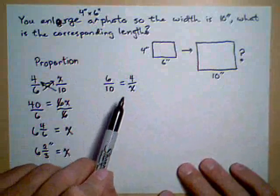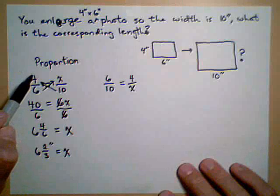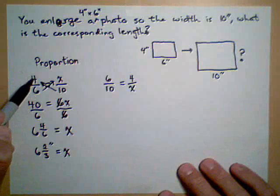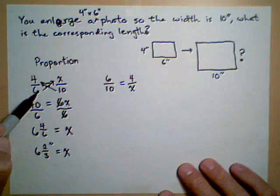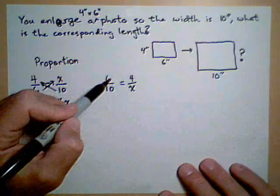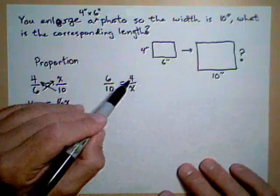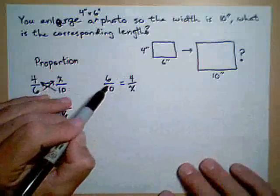Notice, this is important, that with a proportion, the same photo is either lined up vertically, 4 and 6 are both on the small photo, or horizontally, 4 and 6 are both on the small photo. That's important. You wouldn't want to have them matched up diagonally. They have to be matched up horizontally or vertically for this to work.